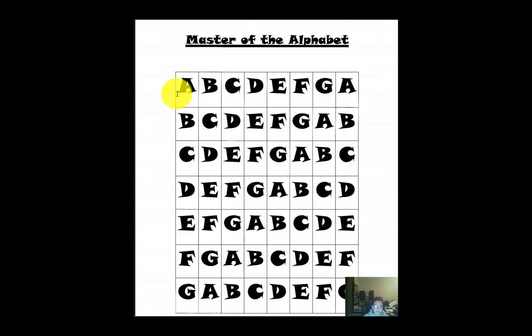So how we do this is we'll chant going up. Down, up, down, up. Here we go. So A, B, C, D, E, F, G, A, G, F, E, D, C, B, A. And that is how the Master of the Alphabet is done.